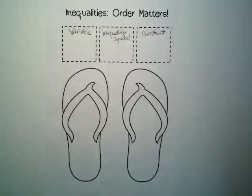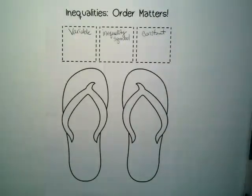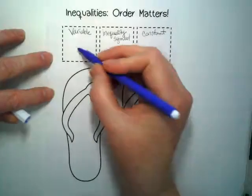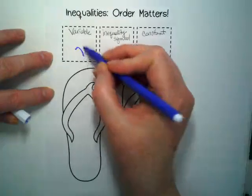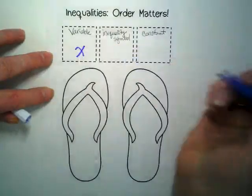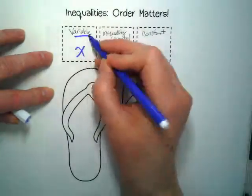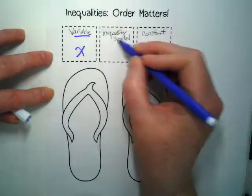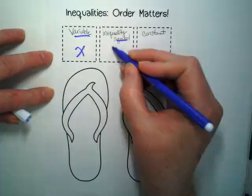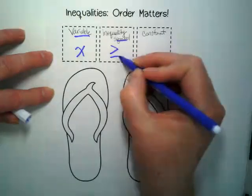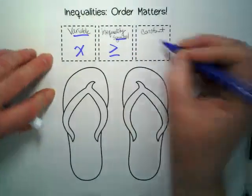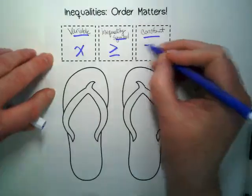This is where I'd like you to use one of your colors. You always want to have the variable on the left, the symbol in the middle, and the constant on the right.